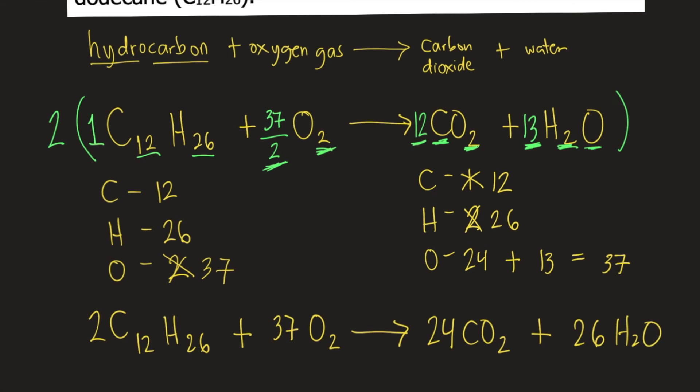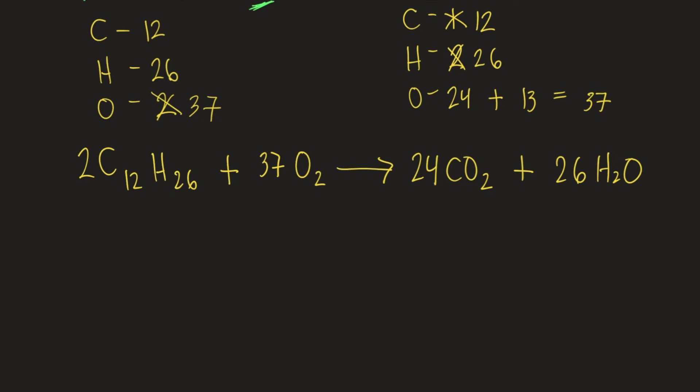Now that our coefficients are whole numbers, let's quickly check if this is really balanced. So let's count again the number of C, H, O on the left side and C, H, O on the right side. So for carbon, we have 2 times 12, that's 24. On the right side, 24 times 1, that's also 24. So carbon is balanced. Hydrogen. On the left side, we have 2 times 26, that's equal to 52. On the right side, we have 26 times 2, that's also equal to 52. So hydrogen is balanced.